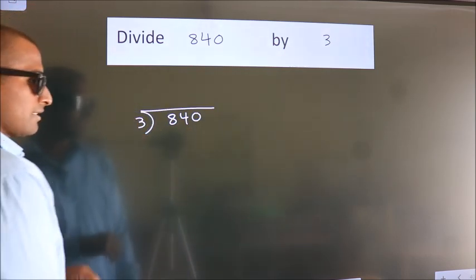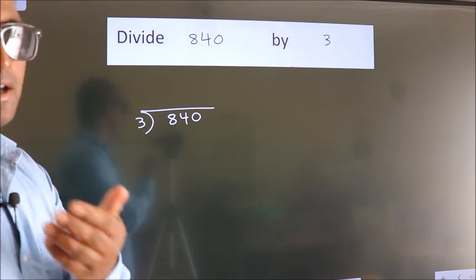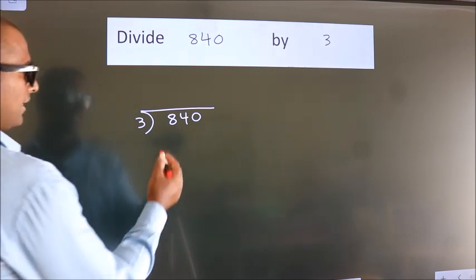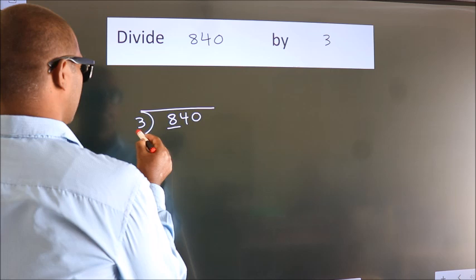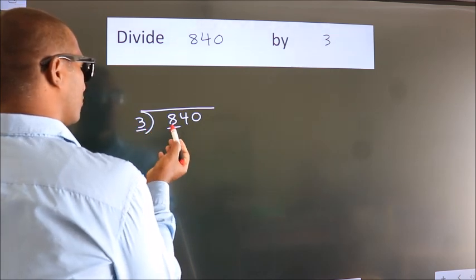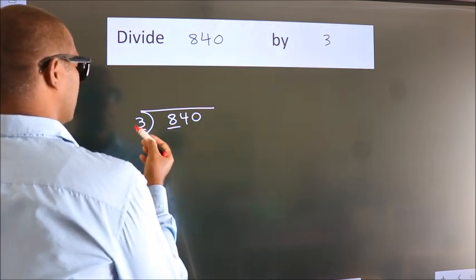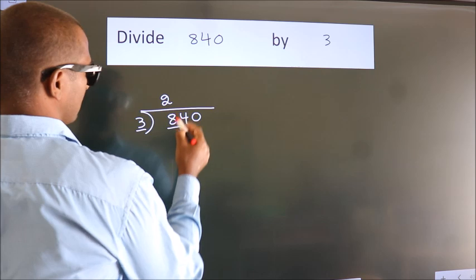This is your step 1. Next, here we have 8, here 3. A number close to 8 in 3 table is 3 times 2, which is 6.